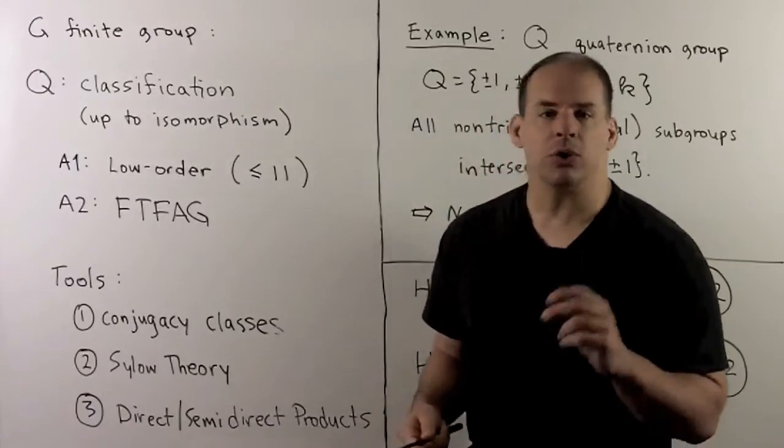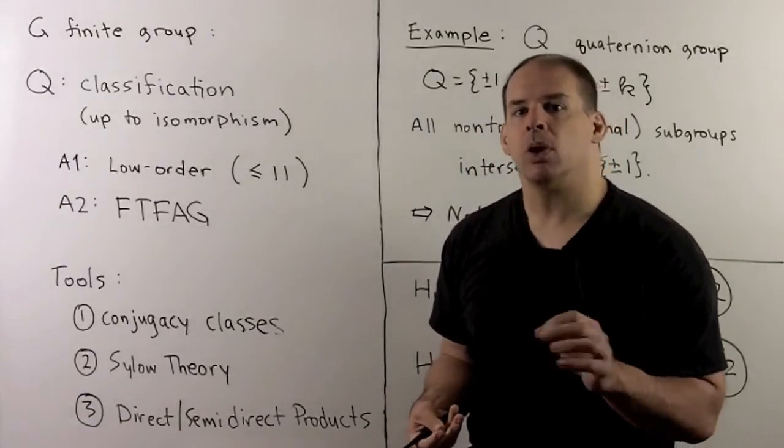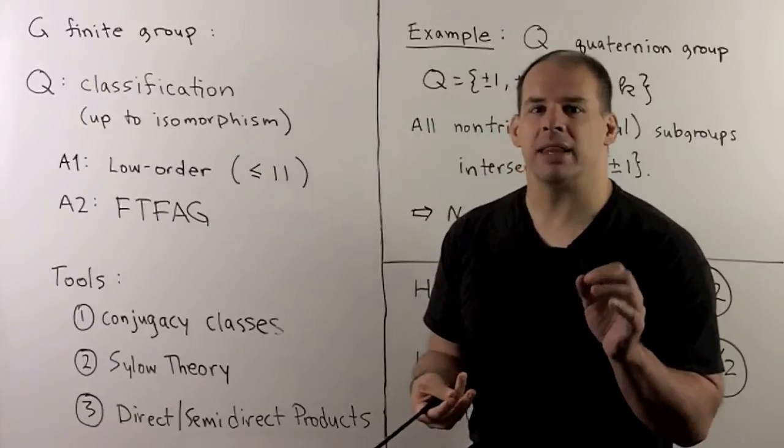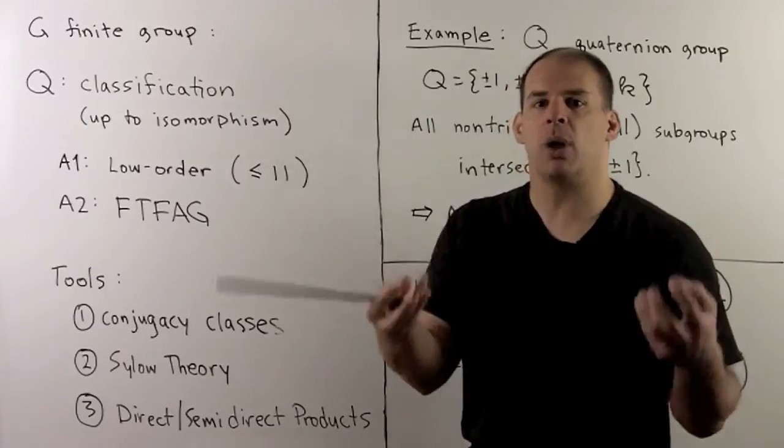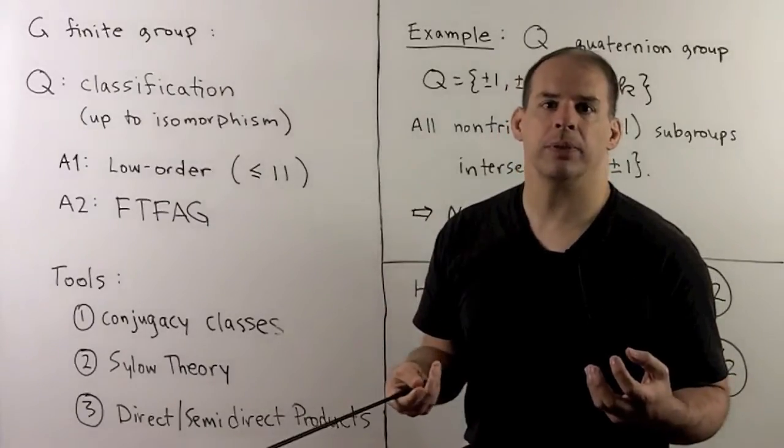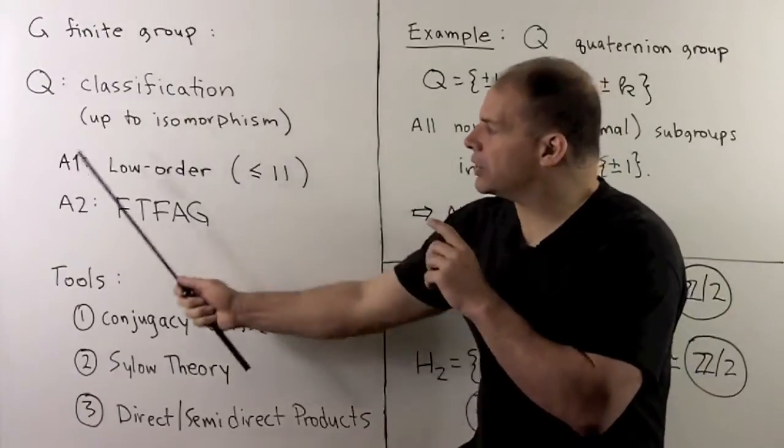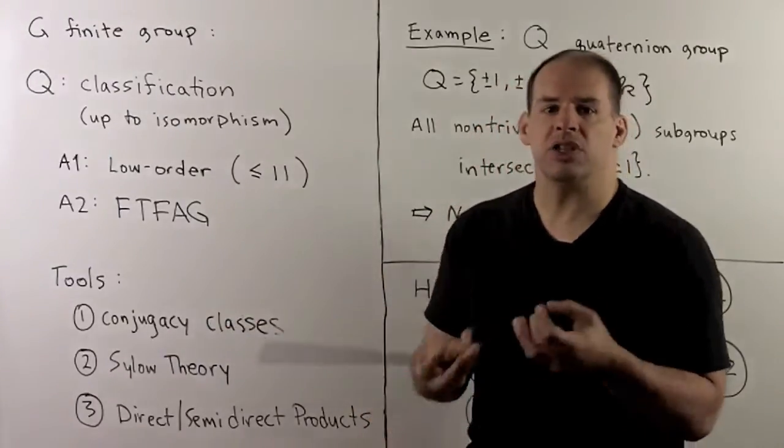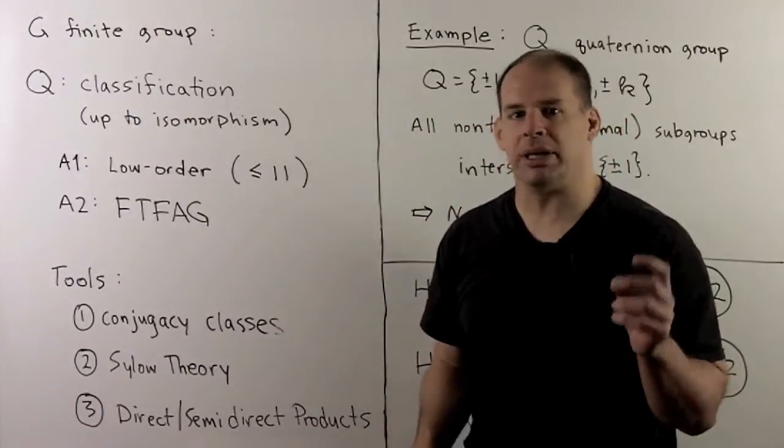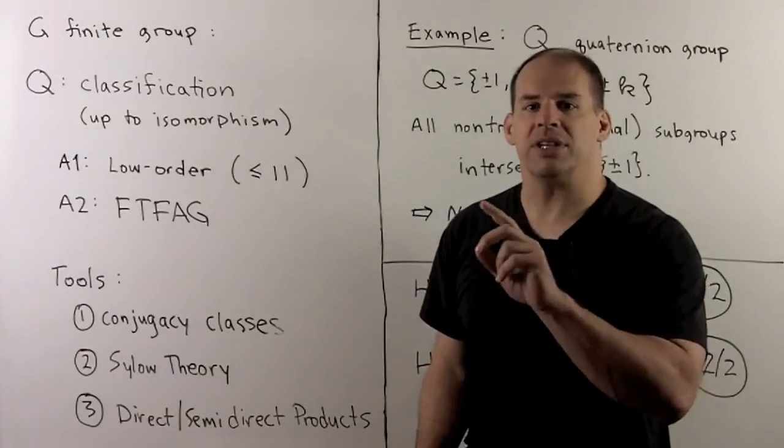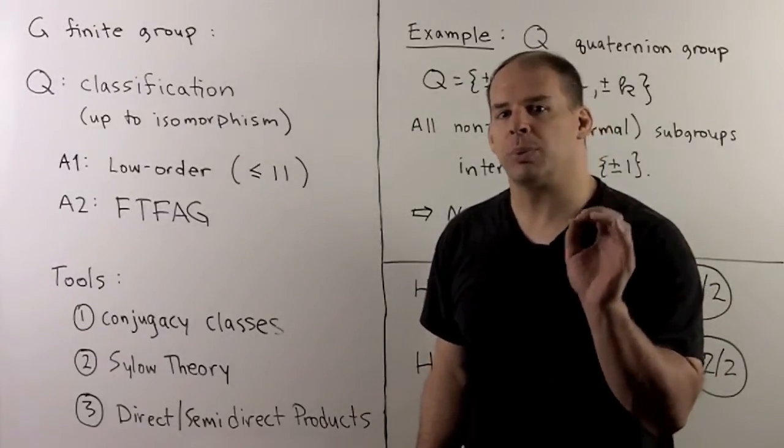Now, for direct or semi-direct products, we're looking for a normal subgroup that lets us break our group into two smaller subgroups. For all the cases we've seen, these smaller subgroups have always been abelian. If we insist on that, we're going to run into problems.